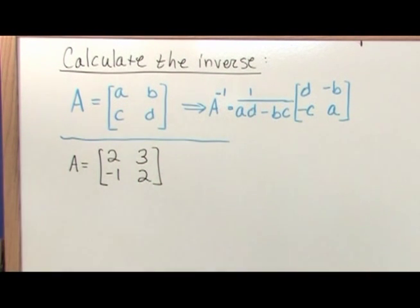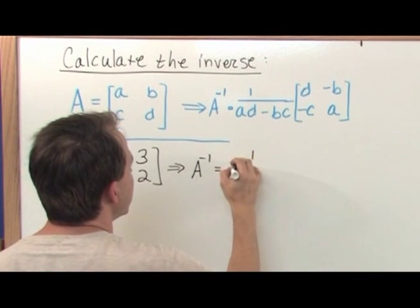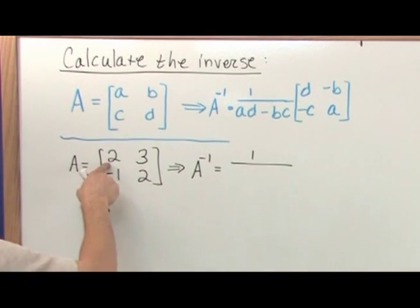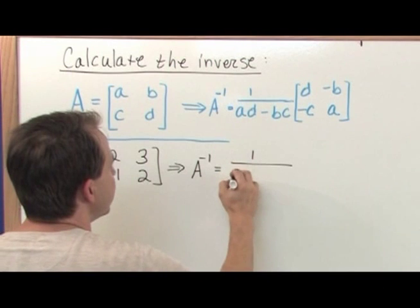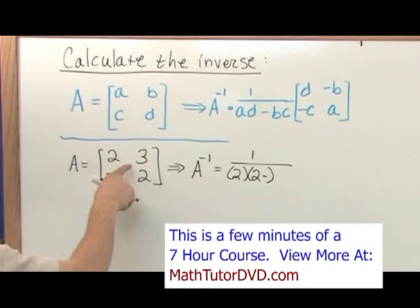That's a matrix, and I'm asked to calculate this matrix inverse. So what I'm going to do is I'm going to calculate the matrix inverse exactly how I have it written down here. 1 over A times D, this times this. So it's going to be 2 times 2 minus B times C.